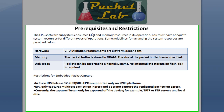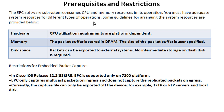Here are a couple of prerequisites and restrictions. You're going to need a beefy box — it's going to burn up memory and CPU when capturing packets. Unfortunately, Cisco doesn't give you any minimum specs for hardware; it just says you're going to be using DRAM and CPU. Captured packets can be exported to external systems, which is generally what you're going to do. No intermediate storage on flash disk is required, and I don't think you can even do that. This is not to replace Wireshark or a Network General Sniffer — it's for quick and dirty situations where you don't have better tools available.